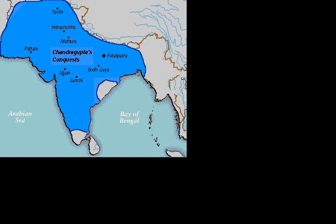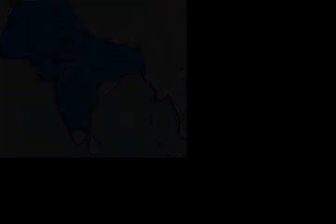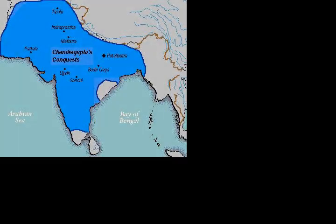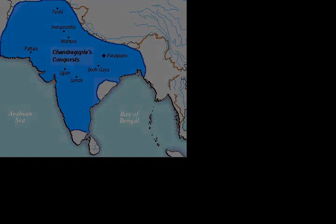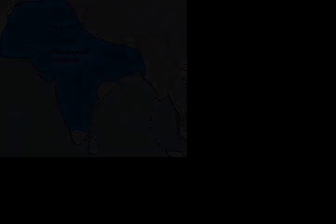Some scholars argue that Kalinga was a strategic threat to the Mauryas. It could interrupt communications between the Mauryan capital Pataliputra and possessions in the central Indian peninsula. Kalinga also controlled the coastline for trade in the Bay of Bengal.